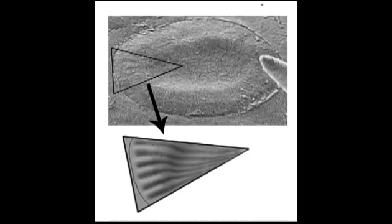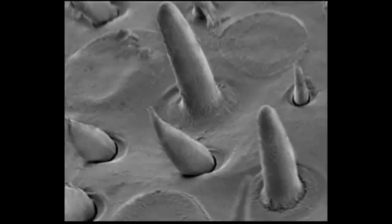There are also peg-type sensilla which may be important in taste, that is very similar to smell but a contact chemical sense. There are also depression-type sensilla, coeloconic and coelocapitula, which may be involved in temperature, humidity, and carbon dioxide sensations.